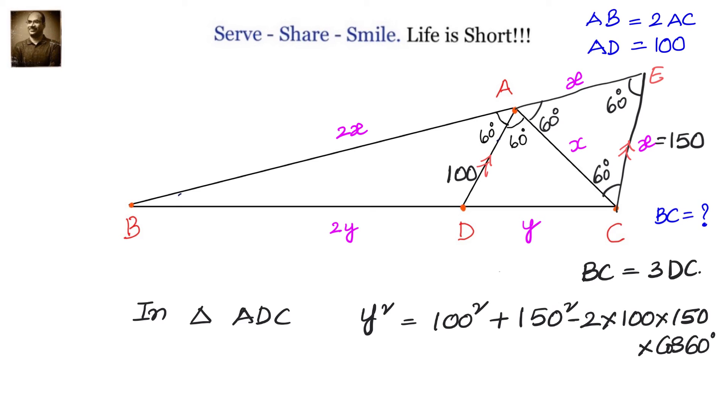Simplify that to calculate the value of y then we can get BC equals 3 times y. So y square equals 10000 plus 22500 minus cos of 60 is 1 by 2. So we have 15000 minus 15000. Simplify that we will get y square equals 17500.